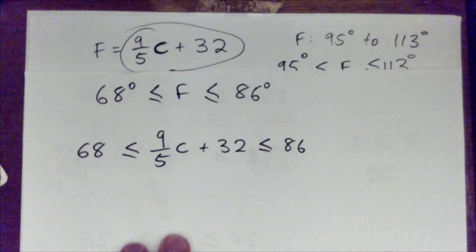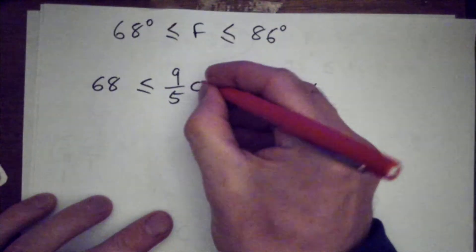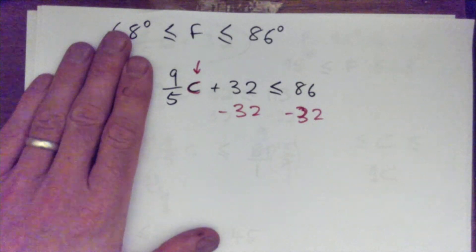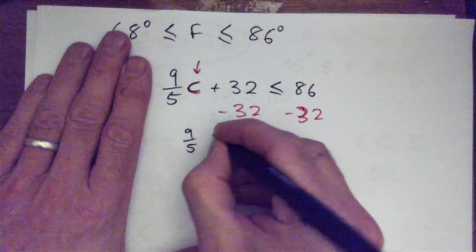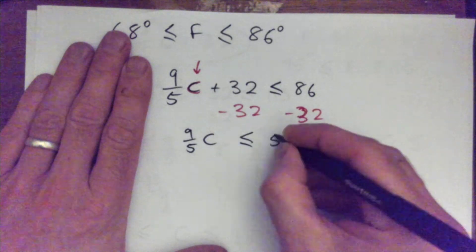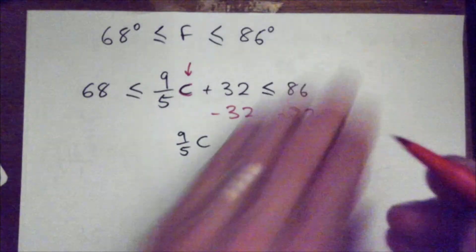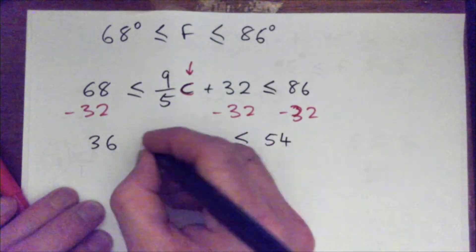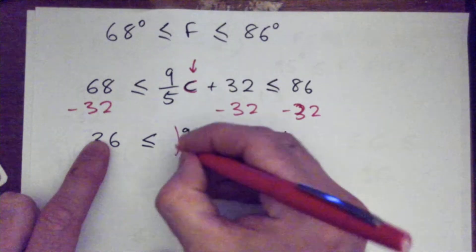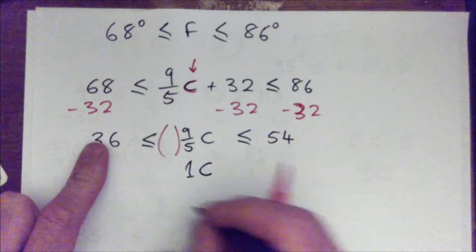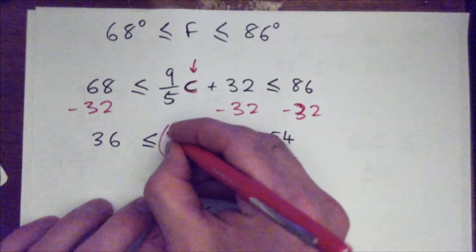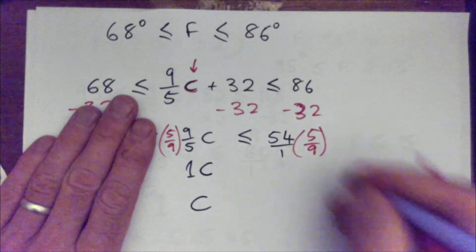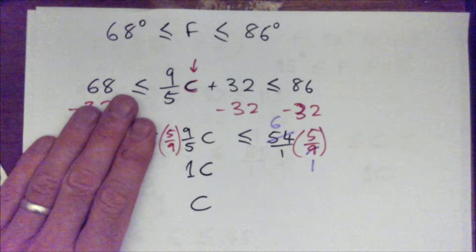We're going to do this quickly. We've got to solve for C, and we subtract 32 from both sides. We imagine we just have one inequality and subtract 32, and we get 9 fifths C less than or equal to 54. But we have the other side too, so at the same time subtract 32 from here — that becomes 36. Now we've got to multiply by the reciprocal to get 1C. We multiply by 5 over 9. 9 into 9 goes once, 9 into 54 goes 6 times, so 6 times 5 is 30.